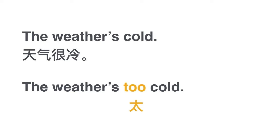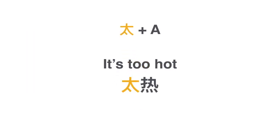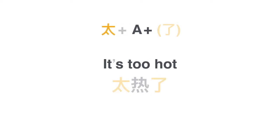太 means 'too.' For example, it's too hot: 太热. Or you can add a 了 at the end — it's too hot: 太热了. Just remember that 太 + adjective + 了 together means 'it's too [adjective].' This 了 works together with 太 in this fixed construction: 太, adjective, 了, meaning 'it's too...'